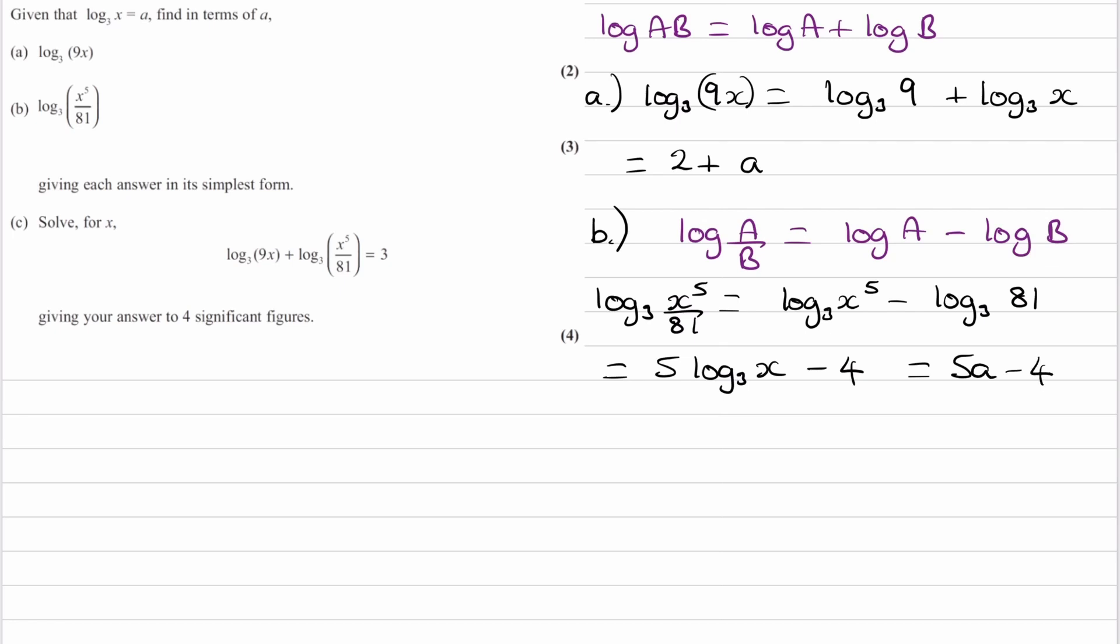So that's pretty straightforward. Once you know that you want to break it apart and then sub in A for log to the base 3 of x, then it becomes pretty straightforward. And now that we have that, part C should also be pretty straightforward. If you weren't sure about this one, think about what we have for A and B, the results for A and B. Use that in part C and then it should be fairly straightforward from there.